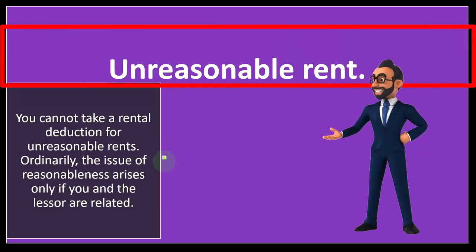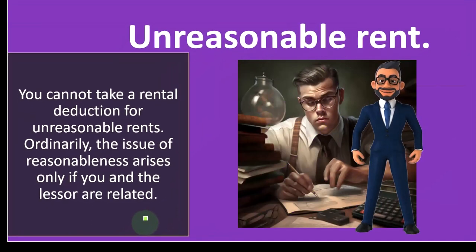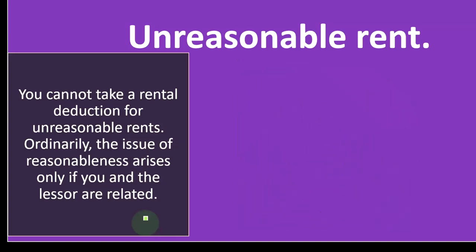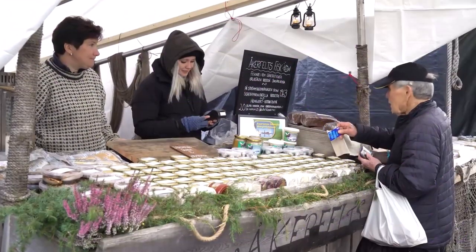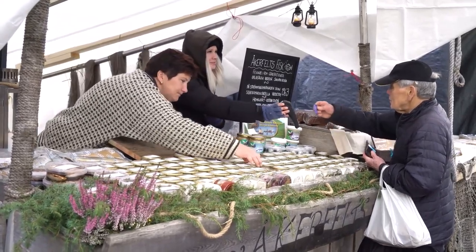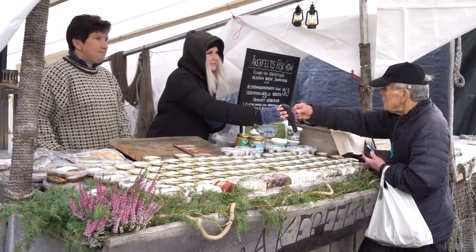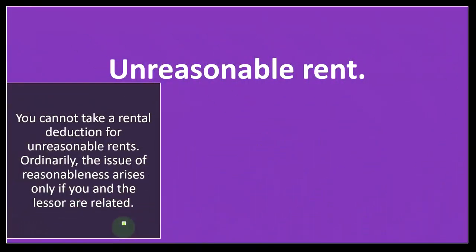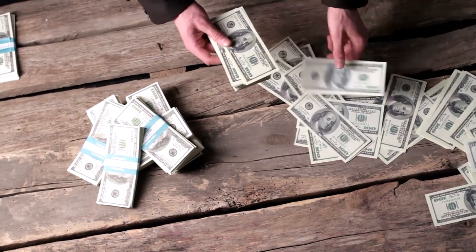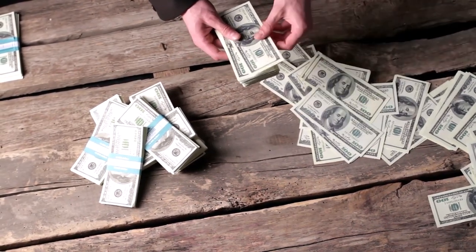Unreasonable rent: you cannot take a rental deduction for unreasonable rents. Ordinarily, the issue of reasonableness arises only if you and the lessor are related. In what we might call an arm's length transaction — two people with opposing interests — the person renting the property wants as low a rent as possible, and the property owner wants to rent it for as high as possible.